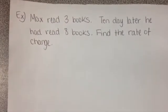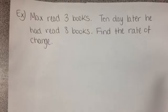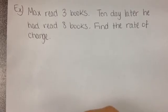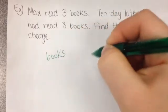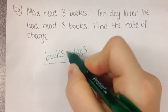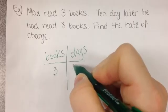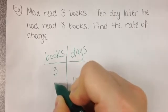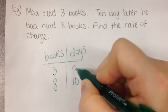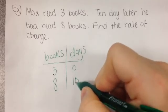I have one more for us to look at. Max read 3 books. 10 days later, he had read 8 books. Find the rate of change. 10 days later, so on the 10th day, he has read how many books? 8. 10 days later, he has read 8. Our starting point is 3. Our starting point, or 0 days, is 3. That's our starting. 10 days later, he has read 8.